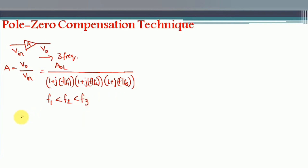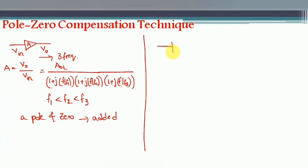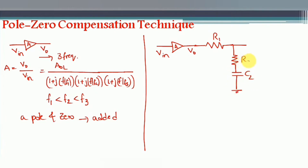To this circuit a pole and a zero are added to the open loop op-amp circuit externally. The condition to maintain is that the zero frequency is lower compared to the pole frequency. Simply, one resistor and capacitor circuit is added externally to the open loop op-amp circuit. The open loop op-amp has gain A, with output v0 and input v_in. Externally we add one resistor R1 and one series combination of resistor R2 and capacitor C2, taking the output v0 dash. This forms the external compensating network.